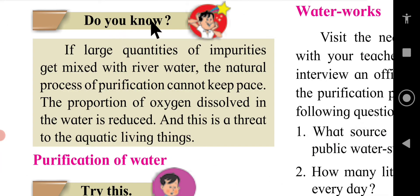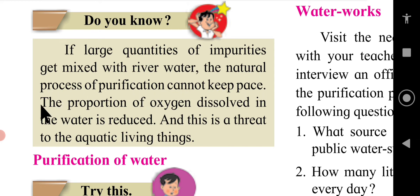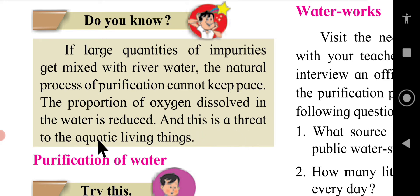If large quantities of impurities get mixed with river water, the natural process of purification cannot keep pace. The proportion of oxygen dissolved in the water is reduced, and this is a threat to aquatic living things.